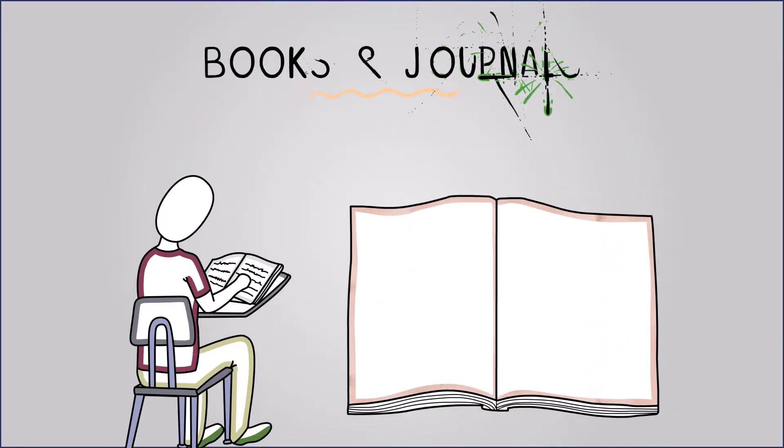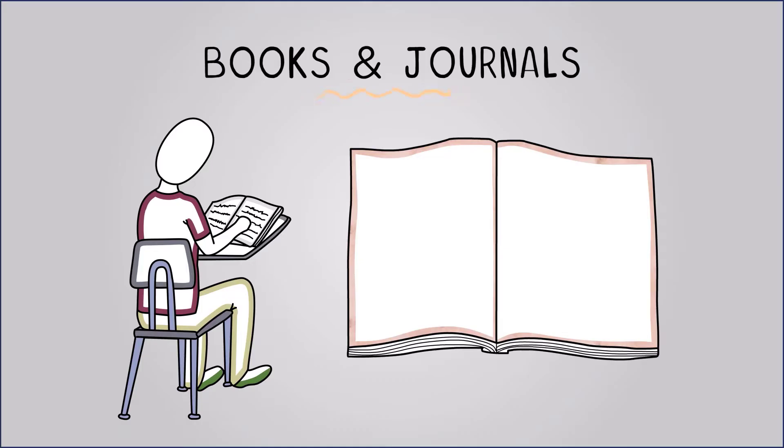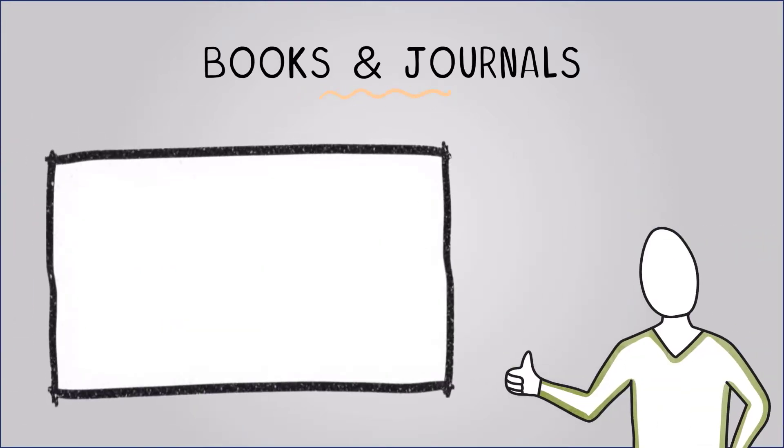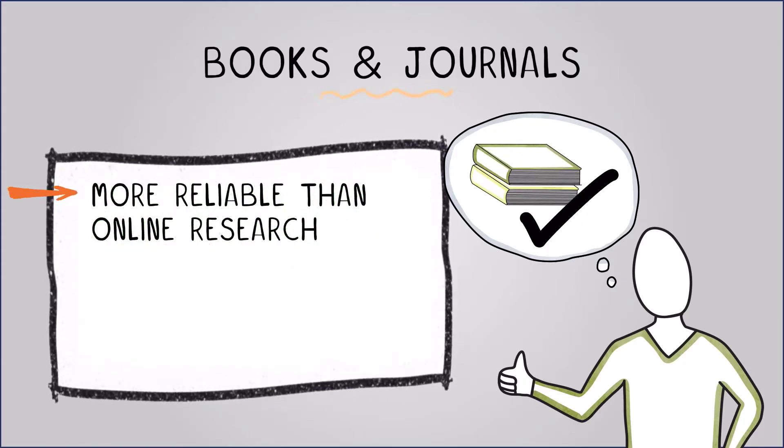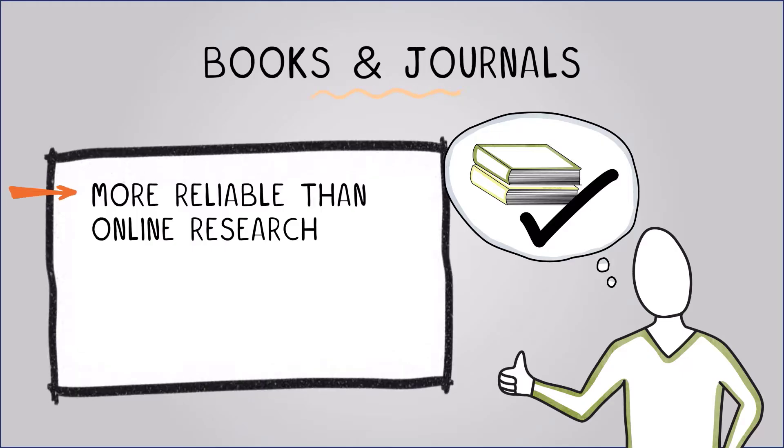First let's discuss books and journals. These resources often contain well-researched, peer-reviewed and in-depth information on a wide range of topics. Advantages include that published materials tend to be more reliable than online research as it is typically produced by trustworthy sources.